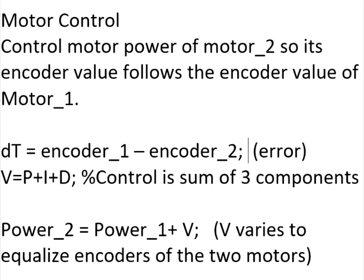The next three trials control a second motor, Motor 2, to make its encoder value match encoder value of the drive motor, Motor 1. If the encoder values match, then the average motor speeds match and the number of axle rotations match as well over the time of the trial. In this case, the error is dT, the difference in the encoder values.